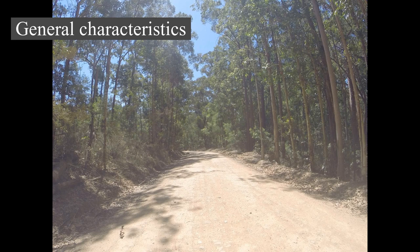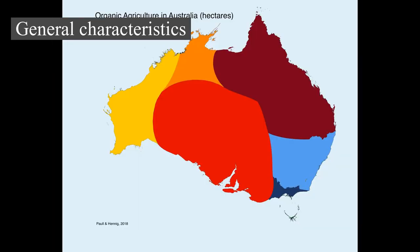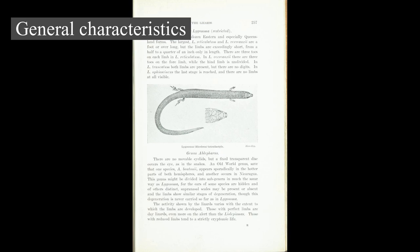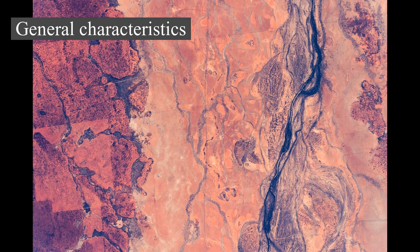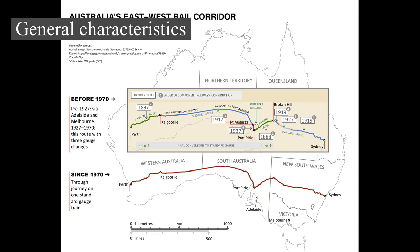Even taller are Mawson Peak at 2,745 m on the remote Australian external territory of Heard Island, and in the Australian Antarctic Territory, Mount McClintock and Mount Menzies at 3,492 m and 3,355 m respectively. Eastern Australia is marked by the Great Dividing Range, which runs parallel to the coast of Queensland, New South Wales, and much of Victoria; the highlands are typically no more than 1,600 m in height. The coastal uplands and a belt of brigalow grasslands lie between the coast and the mountains, while inland of the Dividing Range are large areas of grassland and shrubland, including the western plains of New South Wales and the Mitchell grass downs and mulga lands of inland Queensland. The northernmost point of the mainland is the tropical Cape York Peninsula.